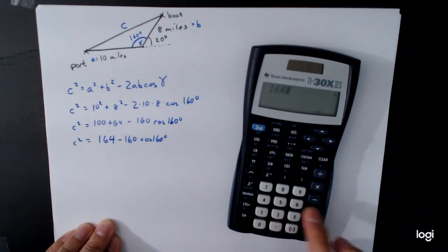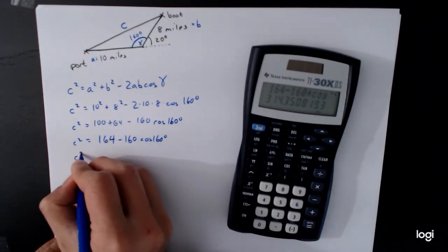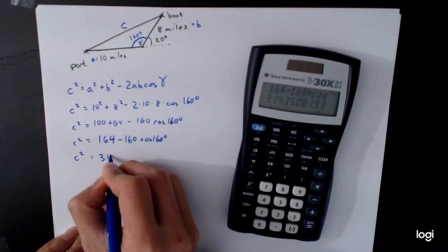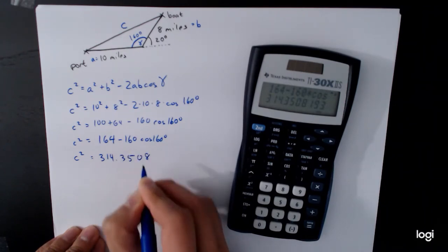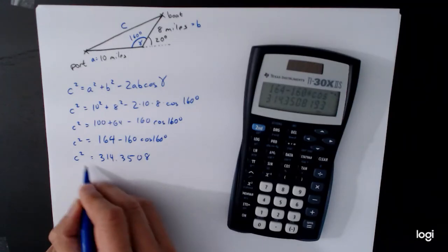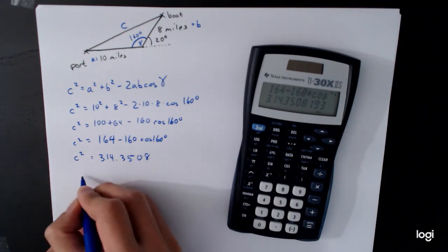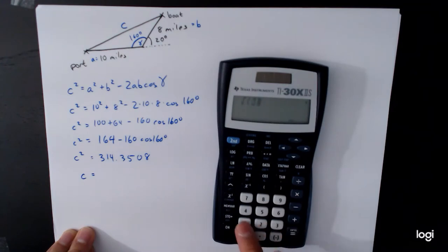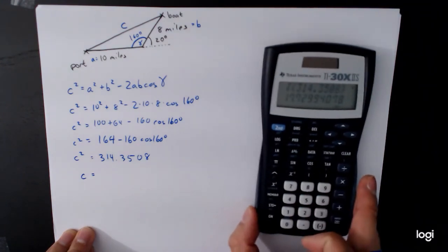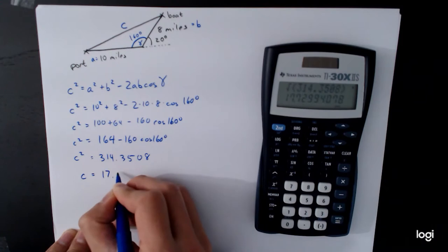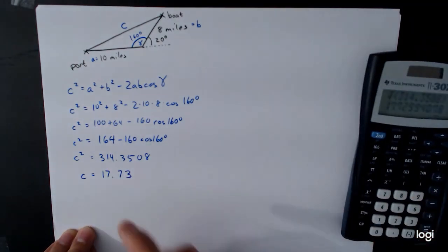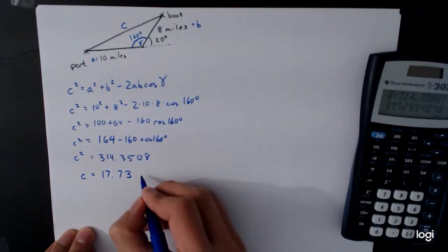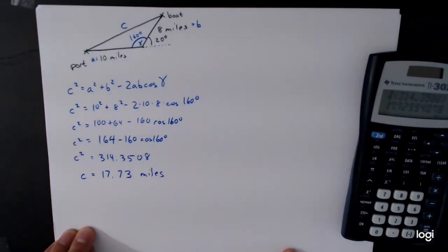And now I plug into calculator, 164 minus 160 times cosine of 160. C squared is equal to 314.3508. Now here I'm keeping four decimals, I'm going to have to take a square root, so I'm going to keep a couple extra digits over here to make my final answer a little bit more accurate. Square root of 314.3508, 17.73. So the boat is 17.73, in this case, miles from the starting position.